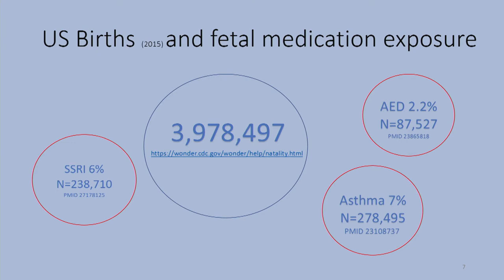In terms of medication exposure, the CDC indicated about 4 million births took place in 2015. Anti-epileptic drugs are used in about 2.2% of pregnancies, yielding about 90,000 children exposed. Asthma medications affect 7%, or about 300,000 fetuses. Antidepressants, including selective serotonin reuptake inhibitors, account for 6%, or about 240,000 fetuses exposed. So there is a fair amount of fetal medication exposure.